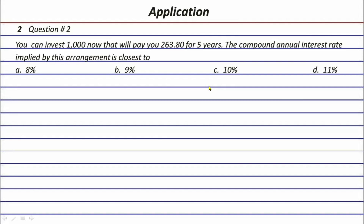Based on the three steps mentioned in the previous video, step one is to read the final requirement: 'the compound annual interest rate implied by this arrangement is closest to.' Even before reading the whole situation, you already have an idea that you might need to do an interpolation later.